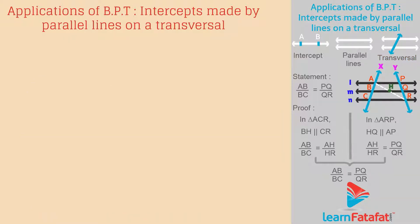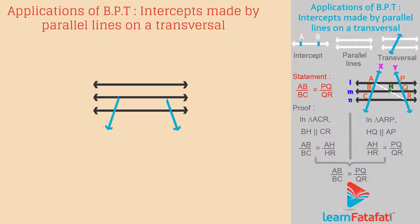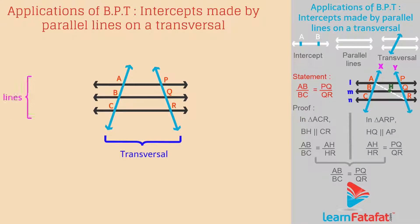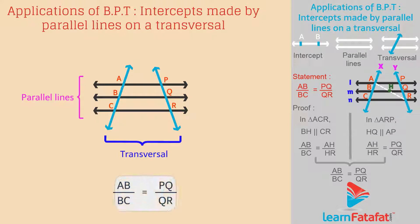So, what does this property state? It states that if two or more transversals intersect three parallel lines, then the ratio of intercepts made on one transversal is equal to the ratio of intercepts made on any other transversal.